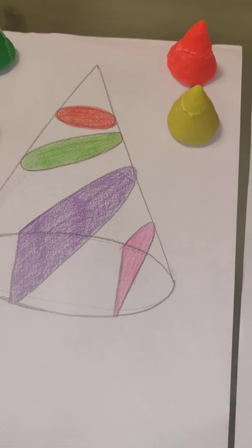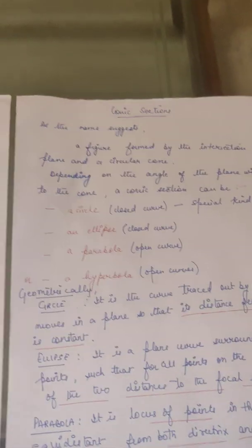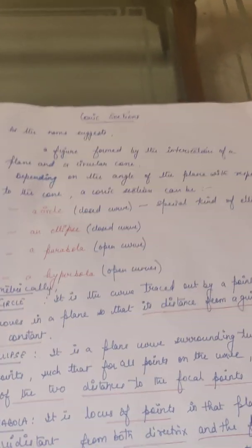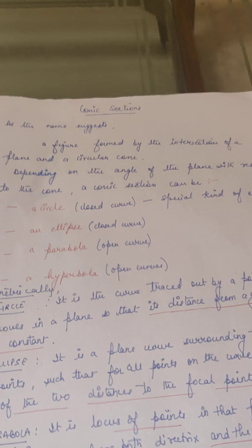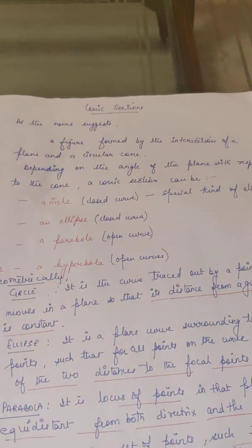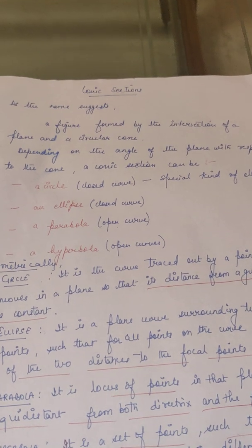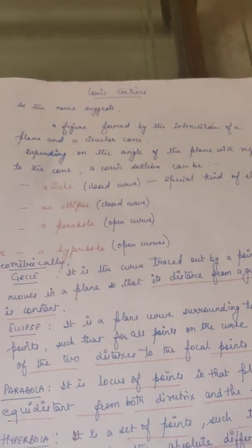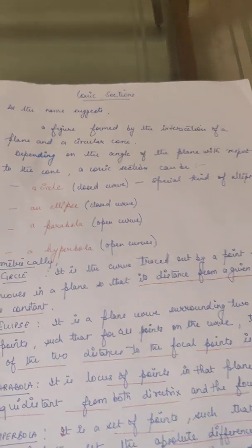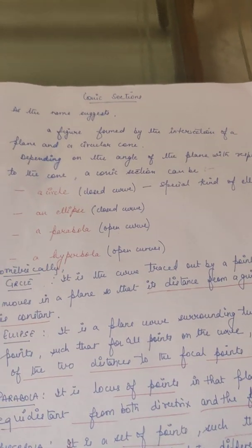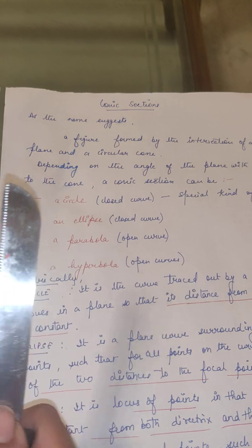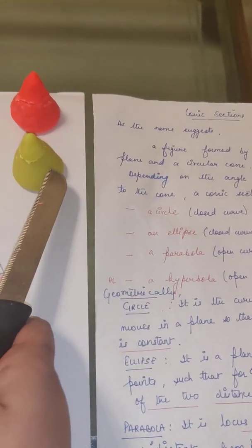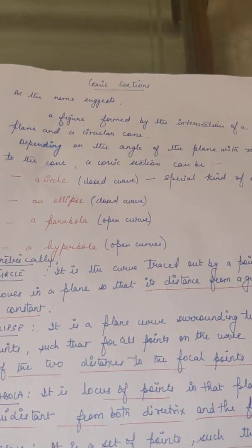Conic section, as the name suggests, means sections of a cone. Cone is a three-dimensional figure. If you take out the cutouts of that cone, those cutouts are actually known as conic sections, and they are two-dimensional figures. The figure is formed by intersection of a plane and a circular cone. If you take a cutout, you have to cut a cone by something. So we are taking a plane. I have taken a knife as a plane, and I have made these cones from clay play-doh.